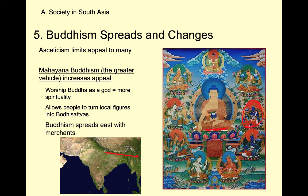Buddhism spreads mostly east along the Silk Roads and southeast into Southeast Asia along Indian Ocean trade routes. Merchants are the primary vehicle for spreading religion — and merchants were second-to-lowest class in Hinduism, so Buddhism was very appealing to them. Mahayana Buddhism especially appealed because it allowed them to reach nirvana now and to incorporate their existing gods as bodhisattvas. As merchants traveled into new ports in Southeast Asia, they would share their faith naturally. Religion typically spreads through merchants.